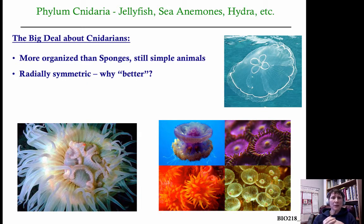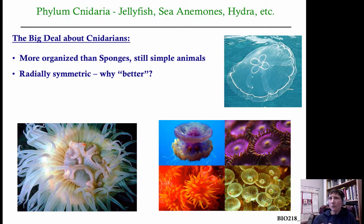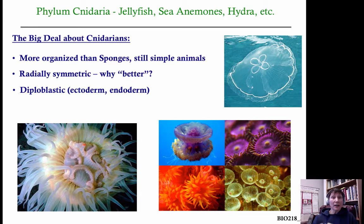One possible drawback is that while they can move more adeptly than sponges and respond to their environment, they don't have cephalization — no head, and no very specialized sensory systems. So they are limited in how they can respond. They can move and respond to the environment, but not in a completely directed way.